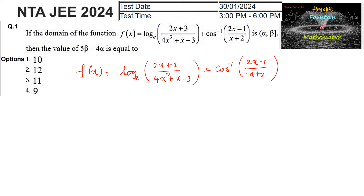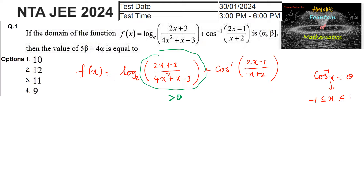The logarithm argument must be greater than 0 to define the function. For cos⁻¹(x), the argument must lie between -1 and +1. So the expression (2x - 1)/(x + 2) must lie between -1 and +1.